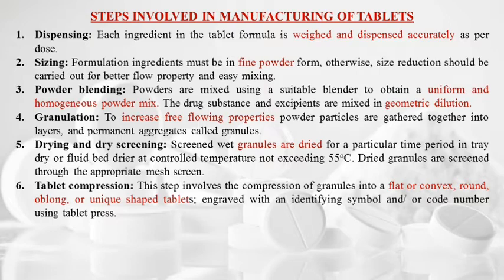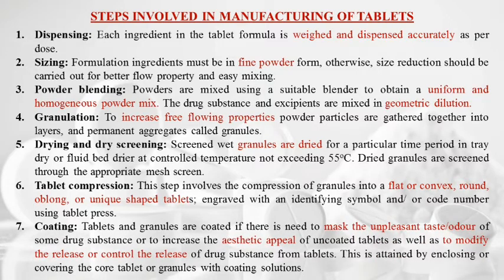Tablets are engraved with an identifying symbol and/or code number using the tablet press. The seventh step is coating — tablets and granules are coated to mask unpleasant taste or odor, increase aesthetic appeal, or to modify or control drug release from tablets. This is achieved by enclosing or covering the core tablet or granules with coating solutions.